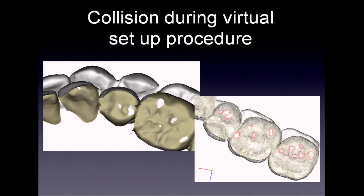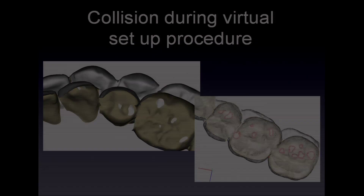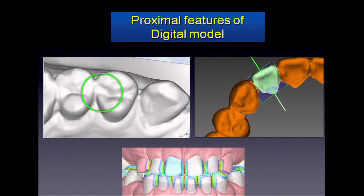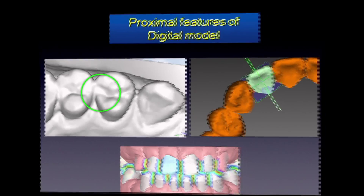Why are arch length and perimeter different? Since there is no limit to dental movement or position, collision on the proximal or occlusal surface is possible. This characteristic affects ABO score and the size of arch perimeter and length.